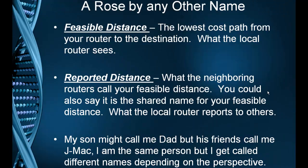Feasible distance is the lowest cost path from your router to the destination. In other words, it's what the local router sees. So router 1 sees a path to router 5, and his best path would be the feasible distance.